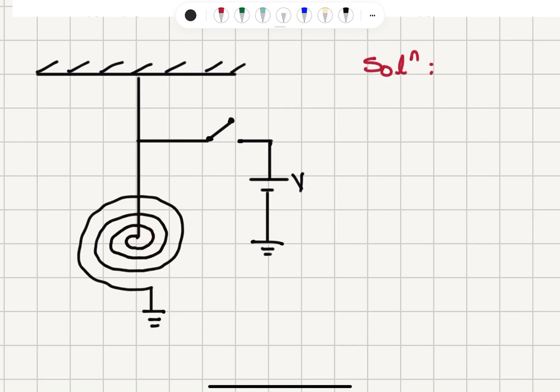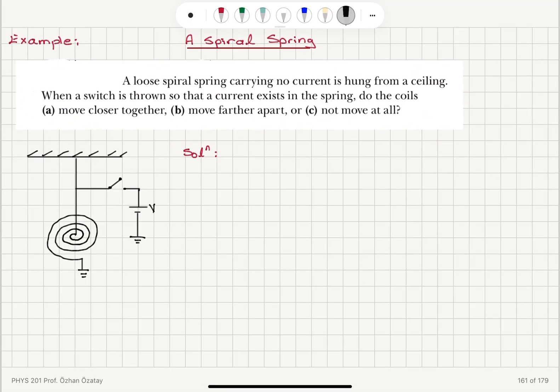we will have a current flowing in this direction here, and then it will flow out here. So you will see that we will have parallel currents all flowing in the same direction in this spiral spring.